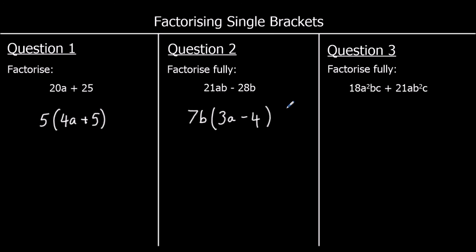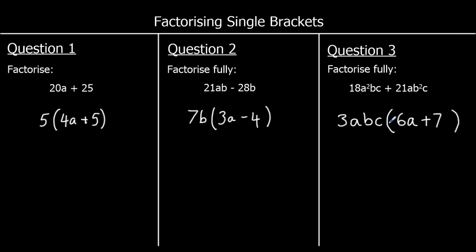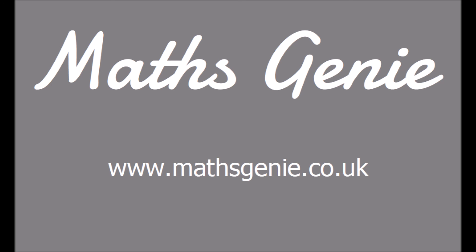Question 3: 18a squared bc plus 21ab squared c. 18 and 21 are both in the 3 times table. a squared and a both have an a; b and b squared both have a b; and there's a c in both as well. So we've got 3abc outside the brackets. Inside: 3 times 6 makes 18, and what do we multiply abc by to get a squared bc? That's another a. And 3 times 7 makes 21, and what do we multiply abc by to get ab squared c? That's a b.